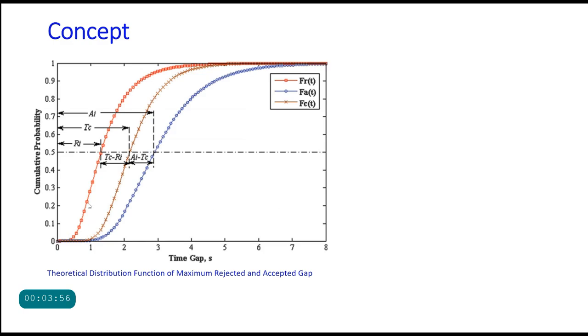This is the theoretical distribution, the red line, of all rejected gaps, so we call it F(R)t. Similarly, this blue distribution for accepted gaps.